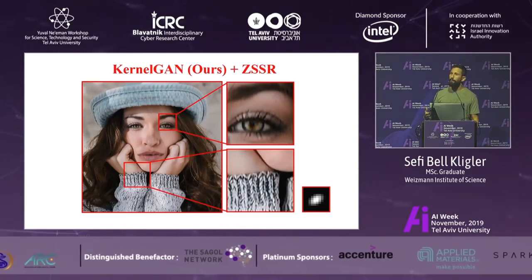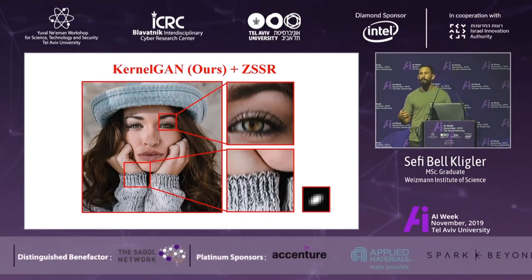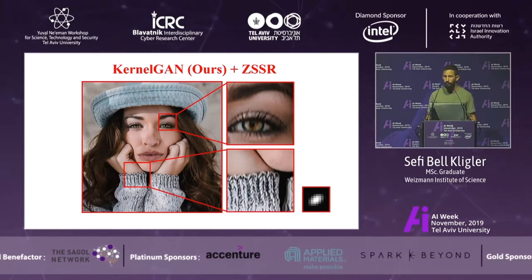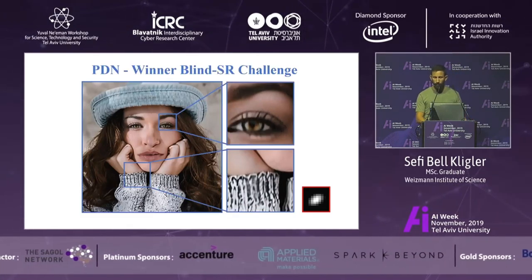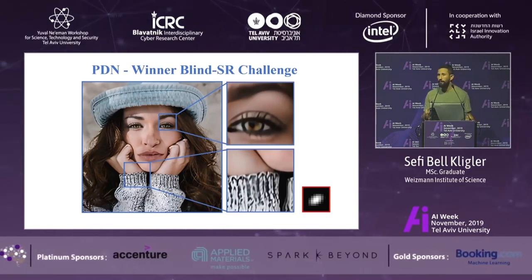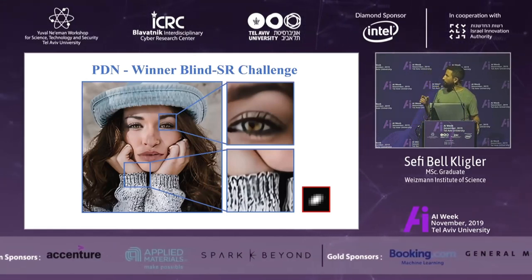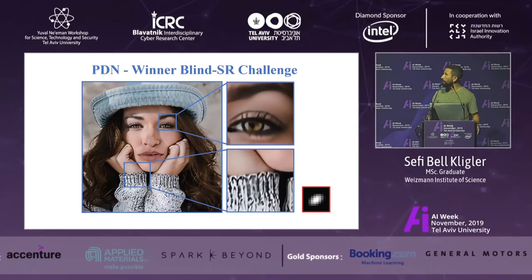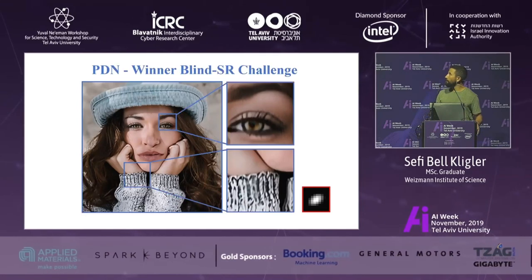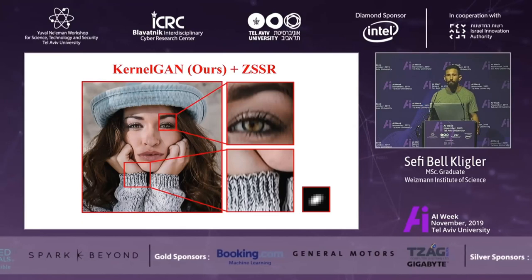When we compare our method to the second family of methods that aim to be agnostic to the kernel — methods that actually won the previous blind super-resolution challenge — at first glance their results look clean and clear, but compared to the ground truth they're far from it. Flickering with our results reveals artifacts around the nose and hand, details lost around the eye, and many hallucinations in the sweater.